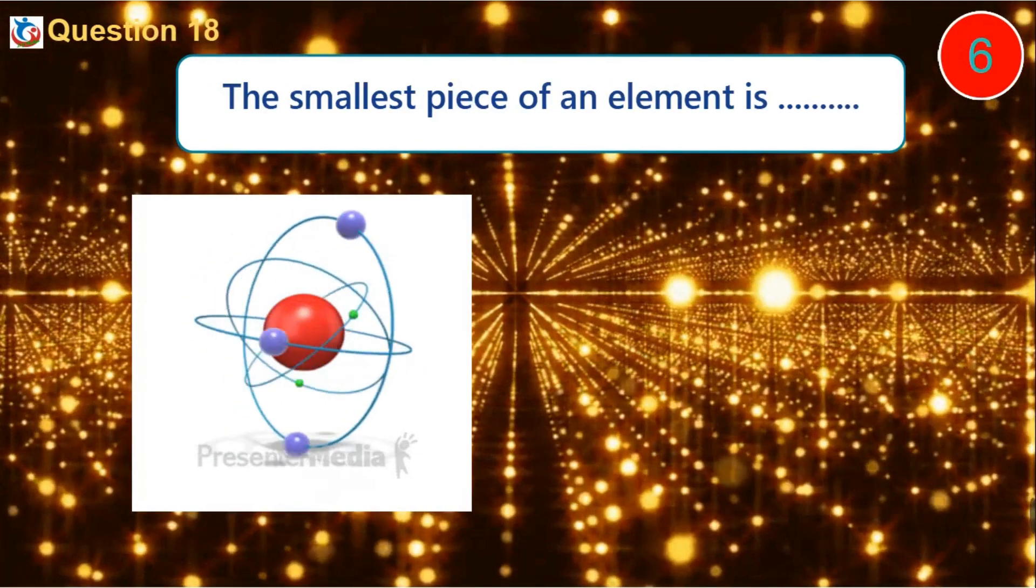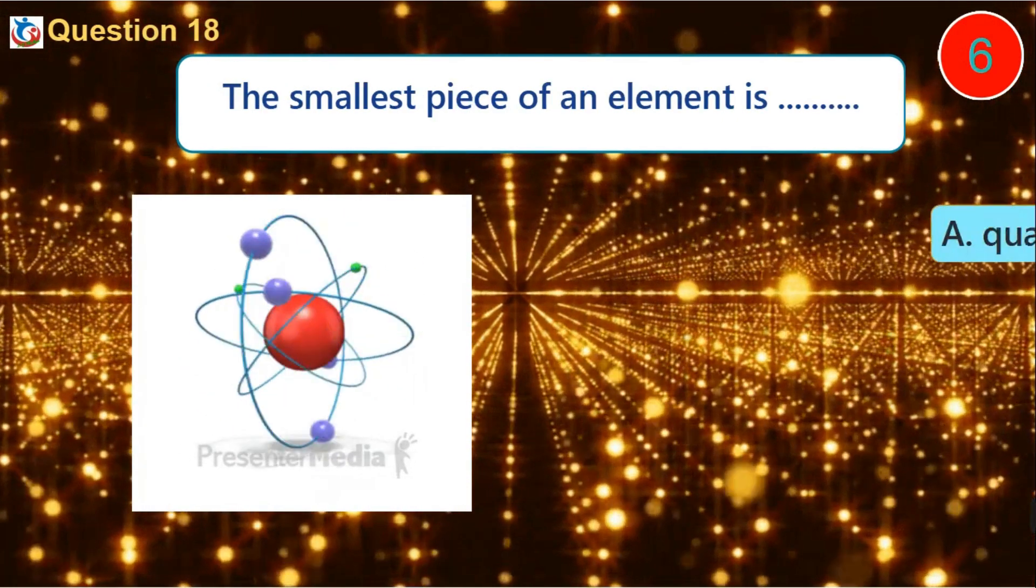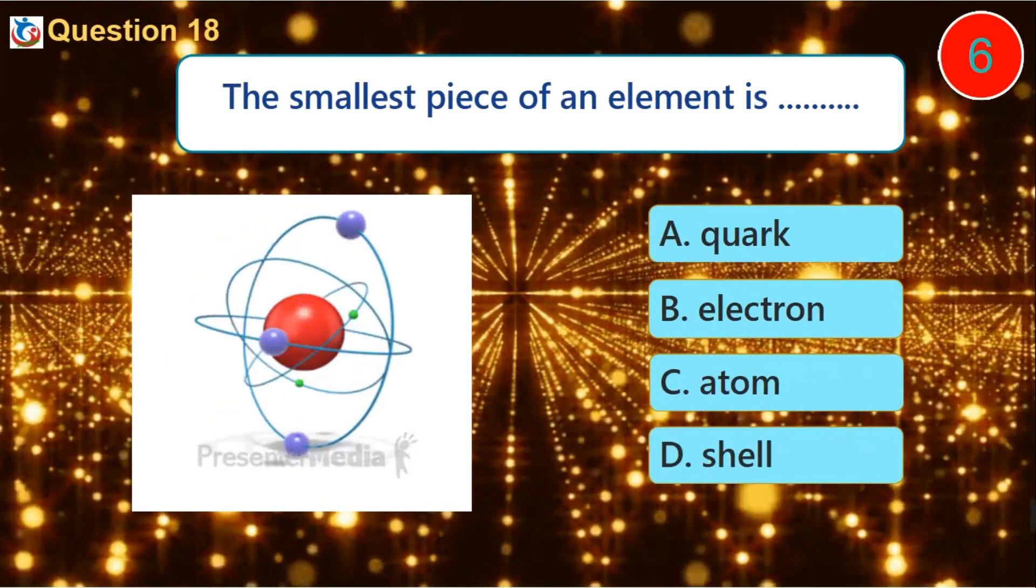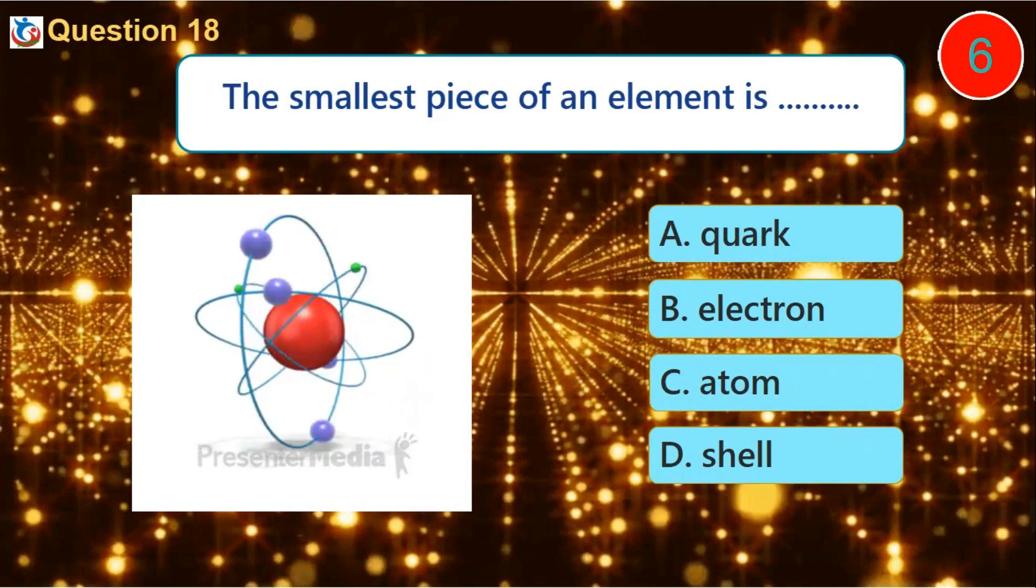Question 18. The smallest piece of an element is: A. Quark B. Electron C. Atom D. Shell